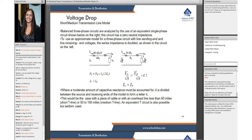Where a moderate amount of capacitive reactance must be accounted for, it is divided between the source and receiving ends of a model to form the letter pi. This would be the case with a piece of cable or with overhead lines less than 50 miles.